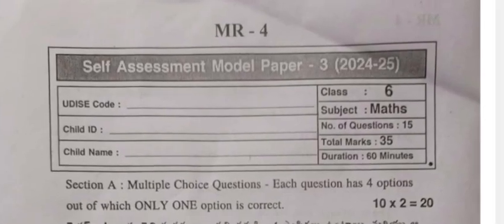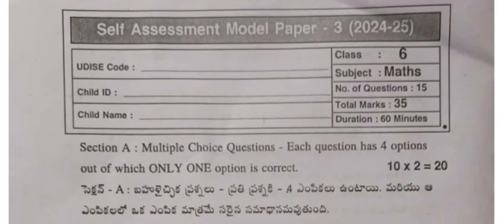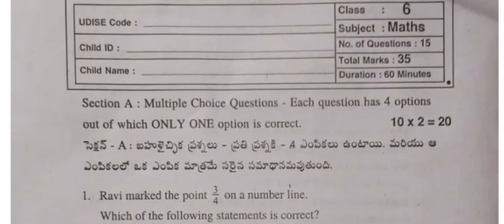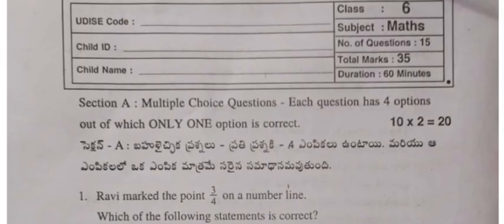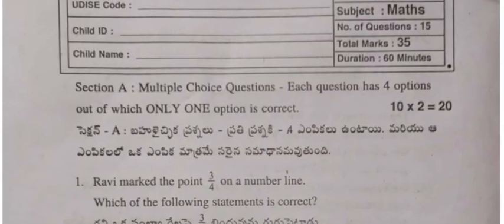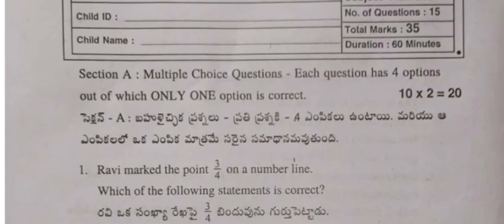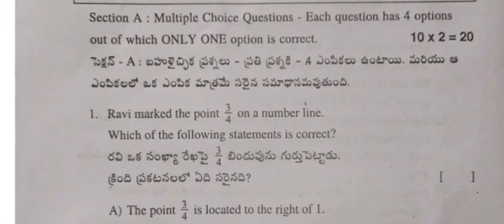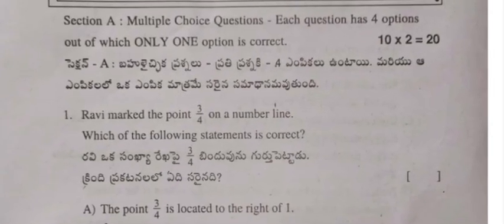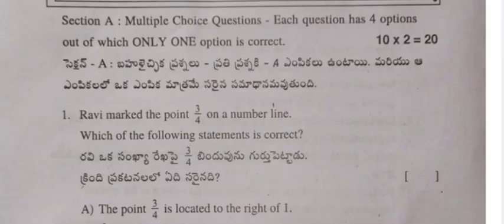Hello, welcome to my YouTube channel. Today's video is about the Self Assessment Model Paper 3 of Class 6th, year 2025. There are 15 questions for 35 marks, duration 30-60 minutes. Multiple choice questions: 10 questions, each for two marks. At the end of this question paper, answers are also given. Do not skip any part of this video — watch till the end.